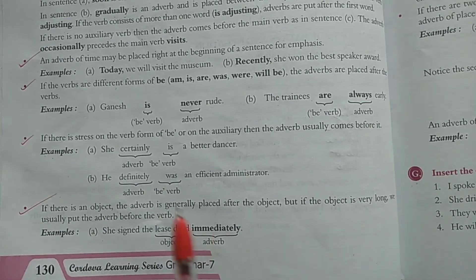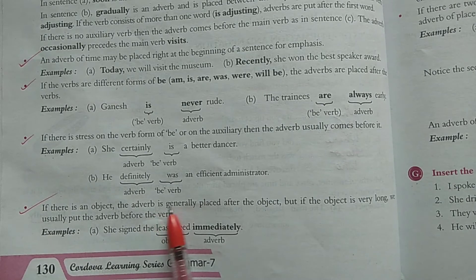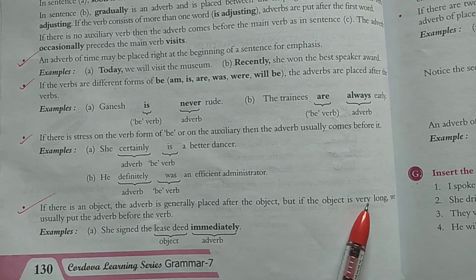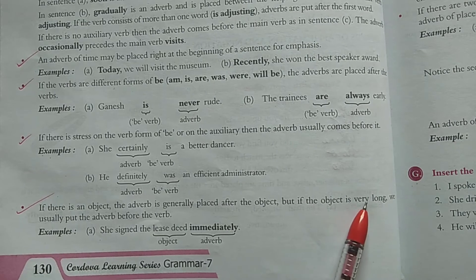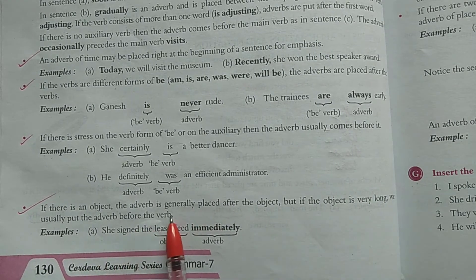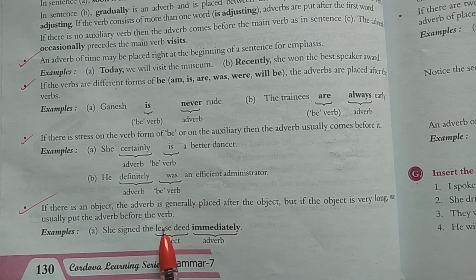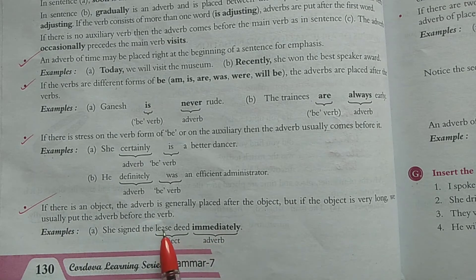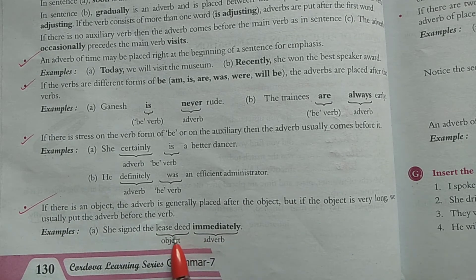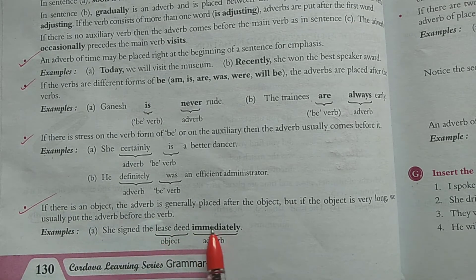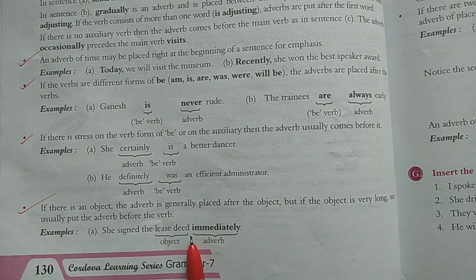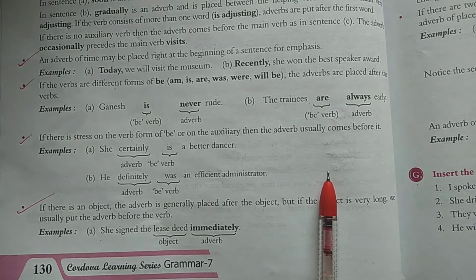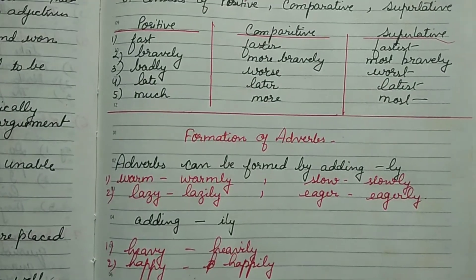If there is an object, the adverb is generally placed after the object. But if the object is very long, we usually put the adverb before the verb. For example: 'She signed the lease deed immediately' — 'lease deed' is the object and 'immediately' is placed after it. This concludes our discussion on the position of adverbs.